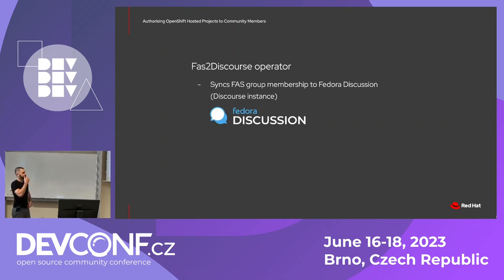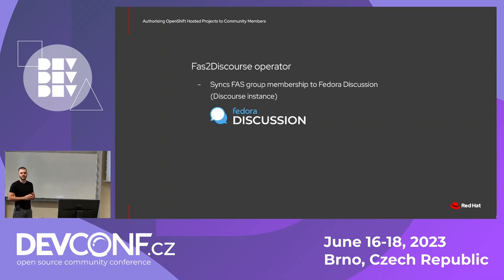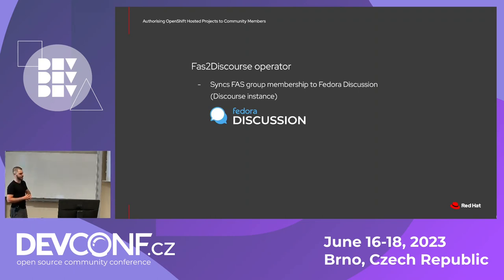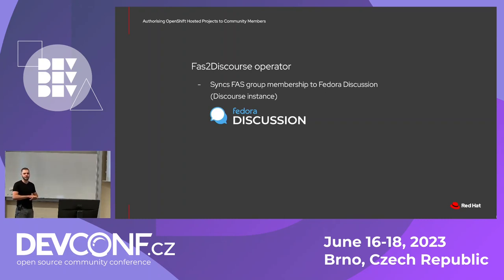The second operator I would like to talk about is FAS to Discourse. Once we had the community shift authorization operator done, we realized that this approach could be used for more than just that one service. FAS to Discourse syncs, again from the Fedora account system, the group membership to Fedora Discussion, which is a Discourse instance that we have — a kind of forum where you can talk to members of the Fedora community.